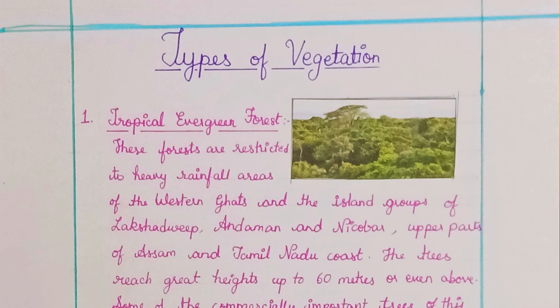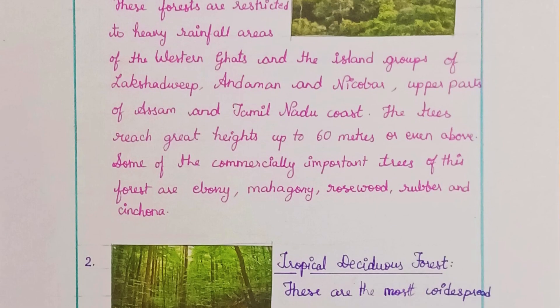Tropical Evergreen Forests are restricted to heavy rainfall areas of the Western Ghats and the island groups of Lakshadweep and Andaman and Nicobar, upper parts of Assam, and the Tamil Nadu coast. The trees reach great heights up to 60 meters or even above. Some of the commercially important trees of this forest are Ebony, Mahogany, Rosewood, Rubber, and Cinchona.